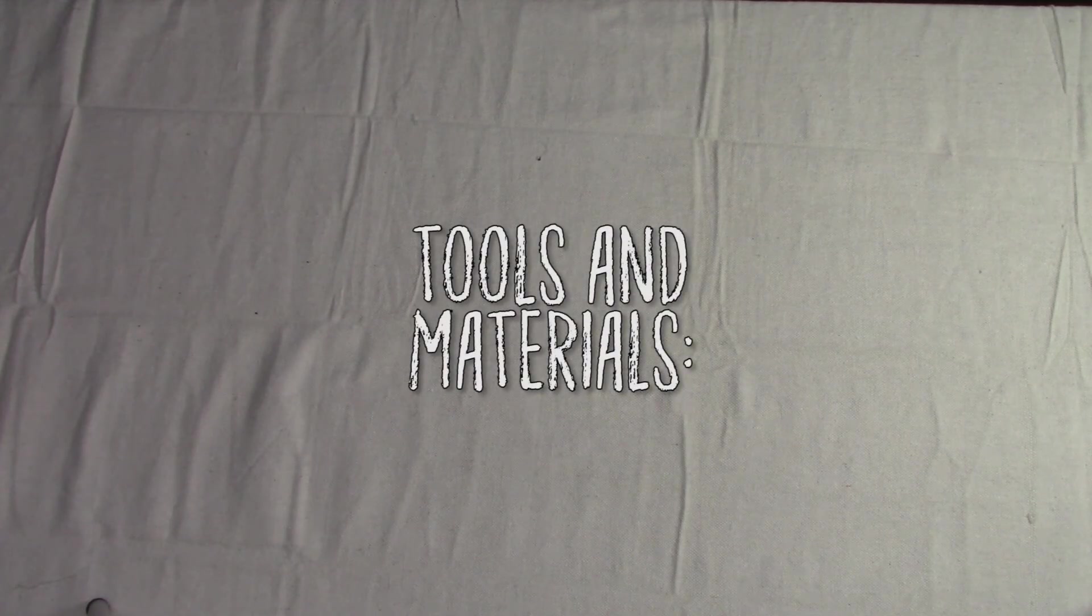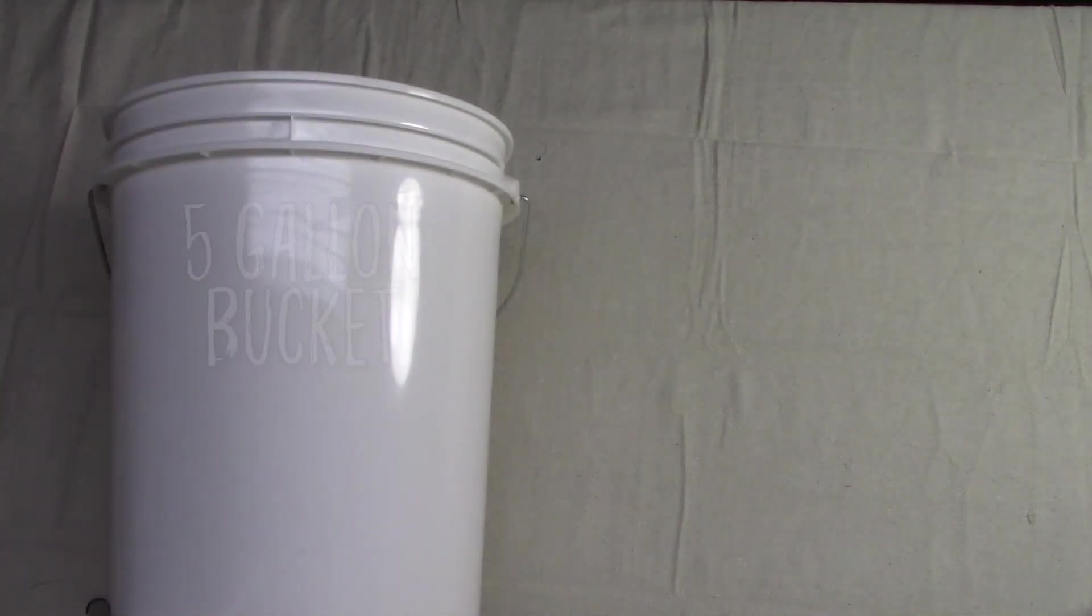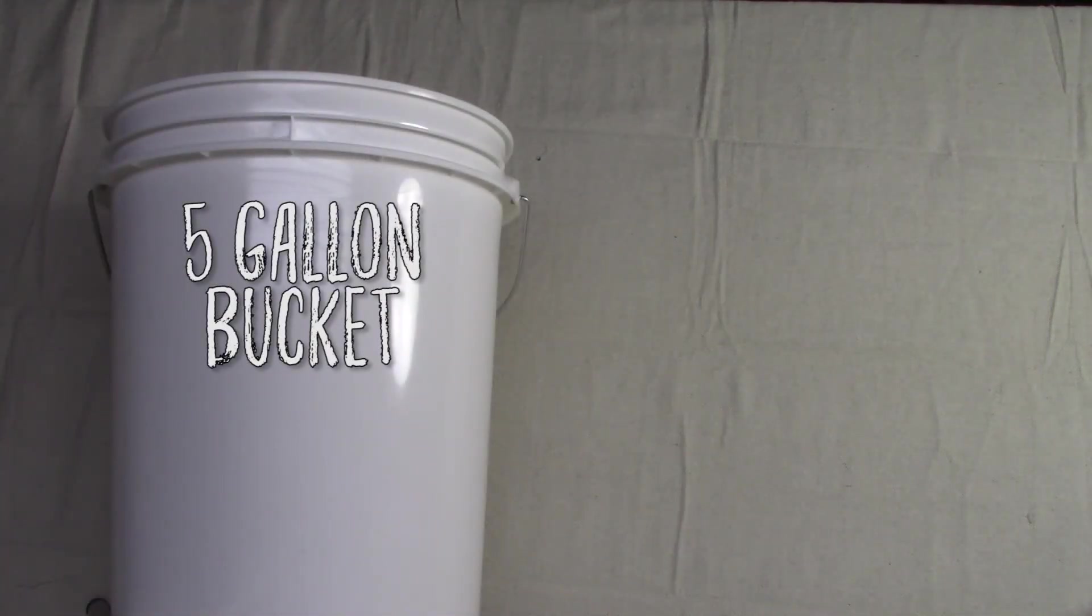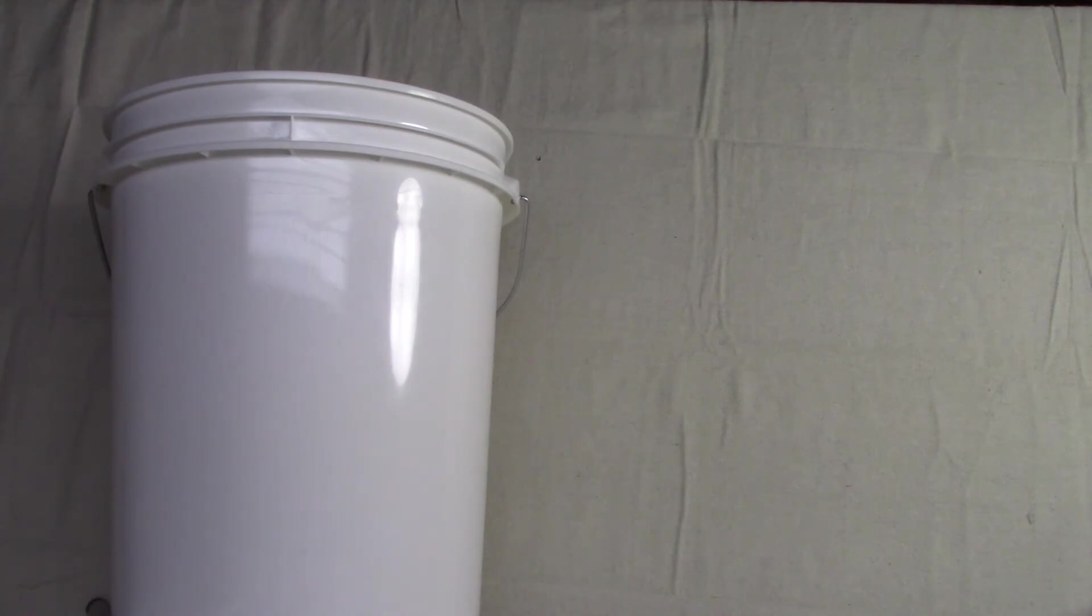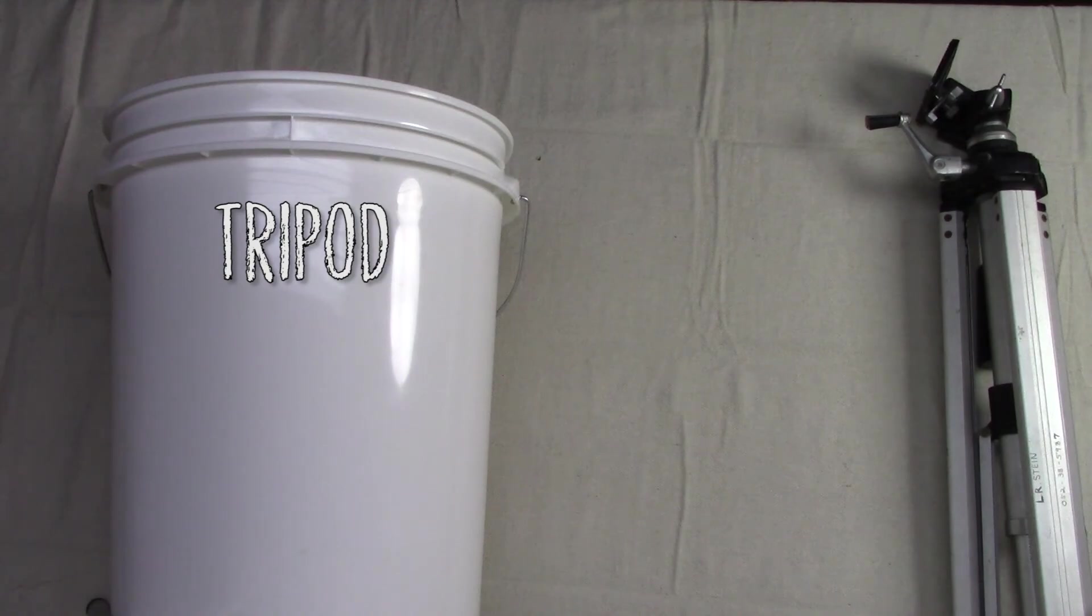Here are the tools and materials you will need. The first thing is a white 5-gallon bucket. These only cost about $3.50 new and you may already have one laying around. The next item you will need is a tripod. I picked up a couple of these at a local thrift store for $5 each, and again you may have one laying around that you can use.